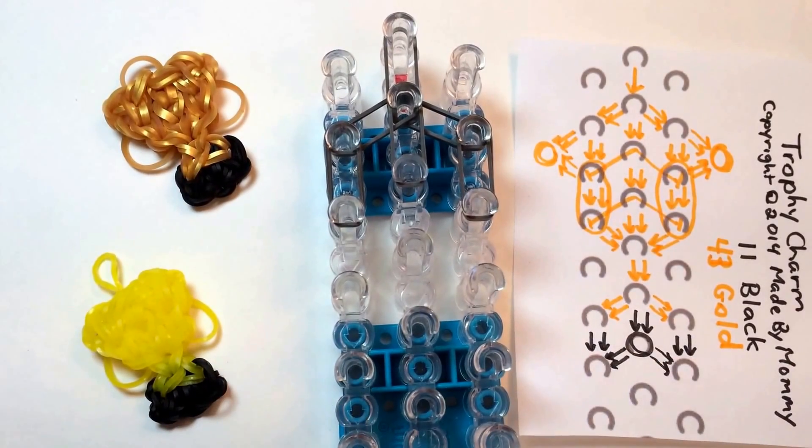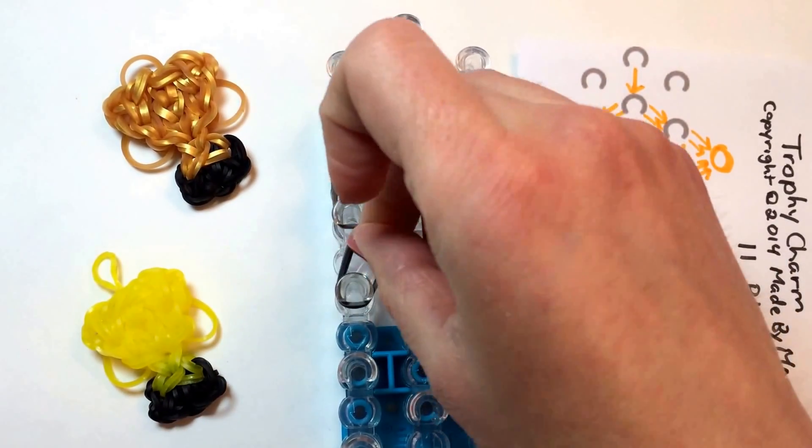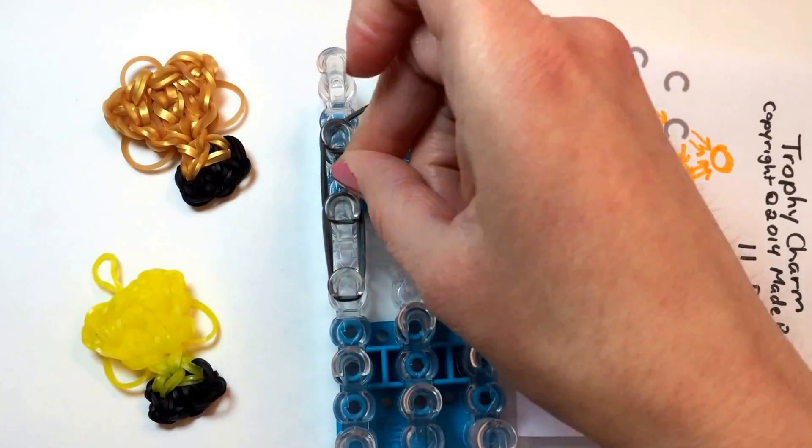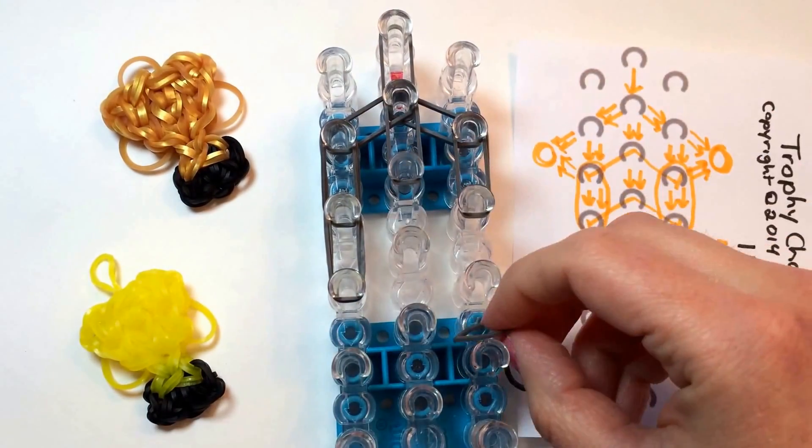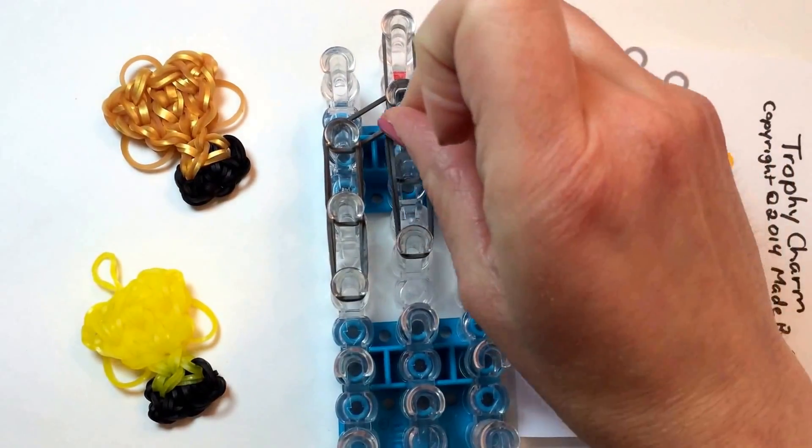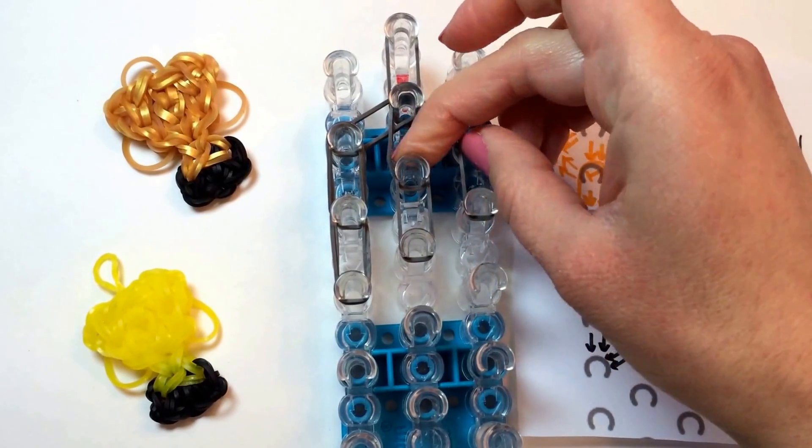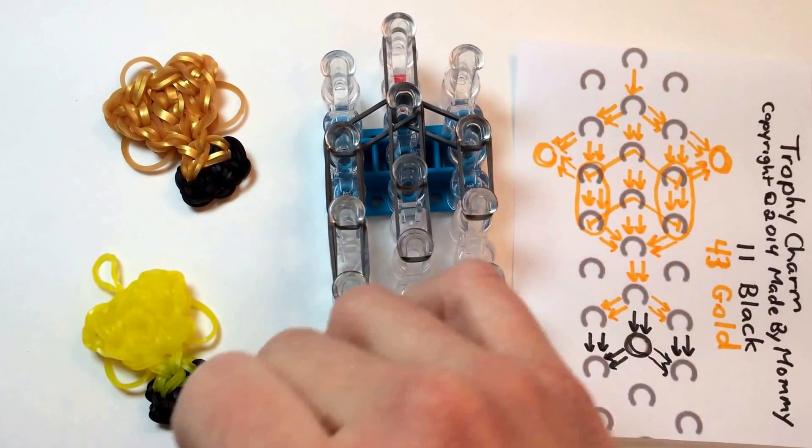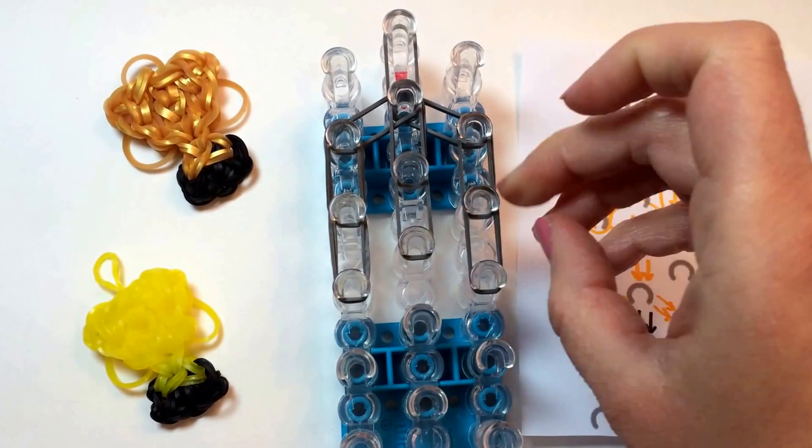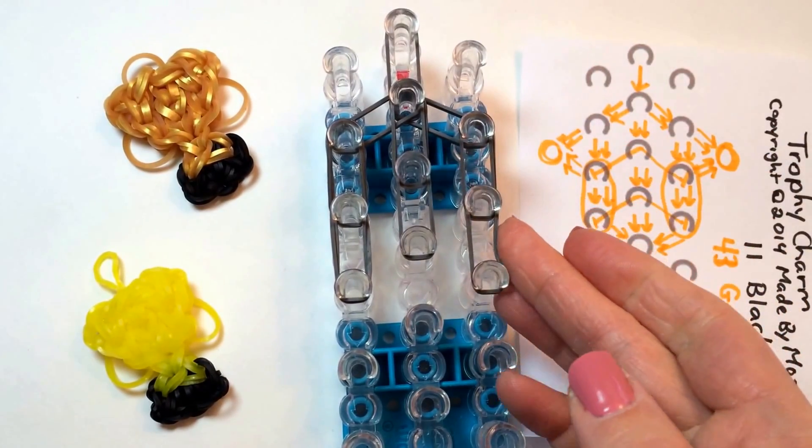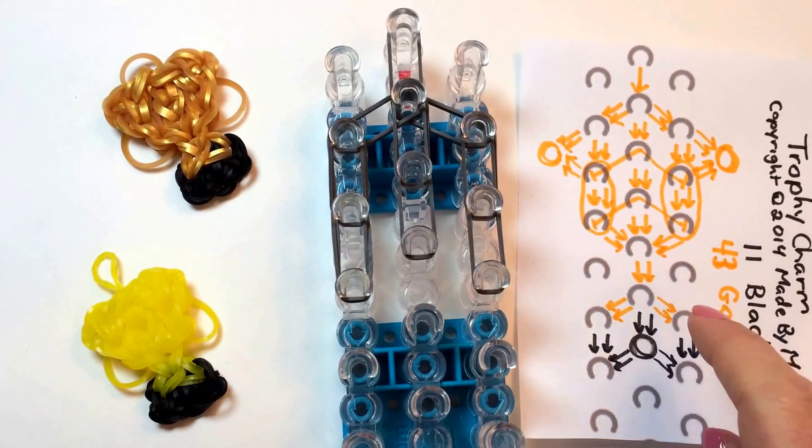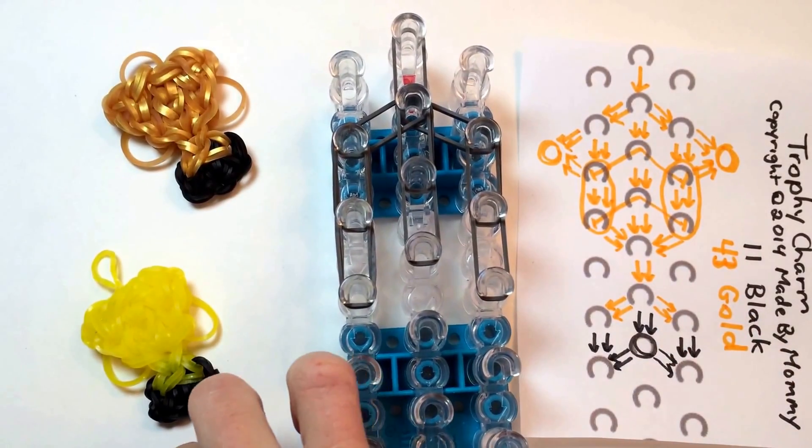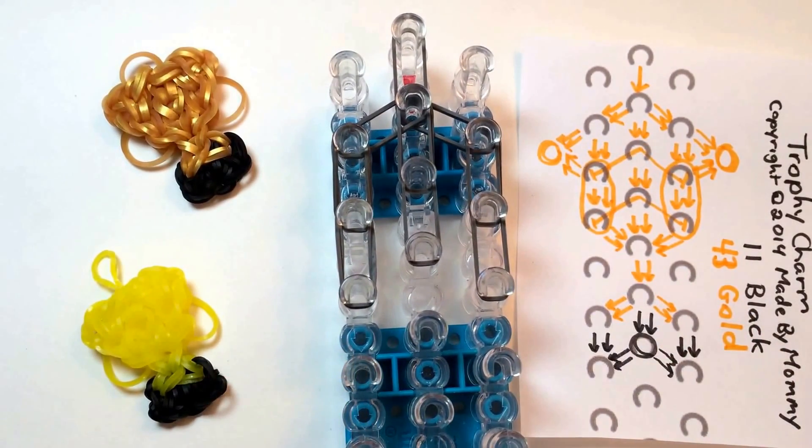We're going to do the same for the next row: two on the left, two at a time in the center, and two at a time on the right. If I'm going too fast for you, just hit pause and catch up. This chart is also available to download at madebymommy.com if you want to print it out to follow along.